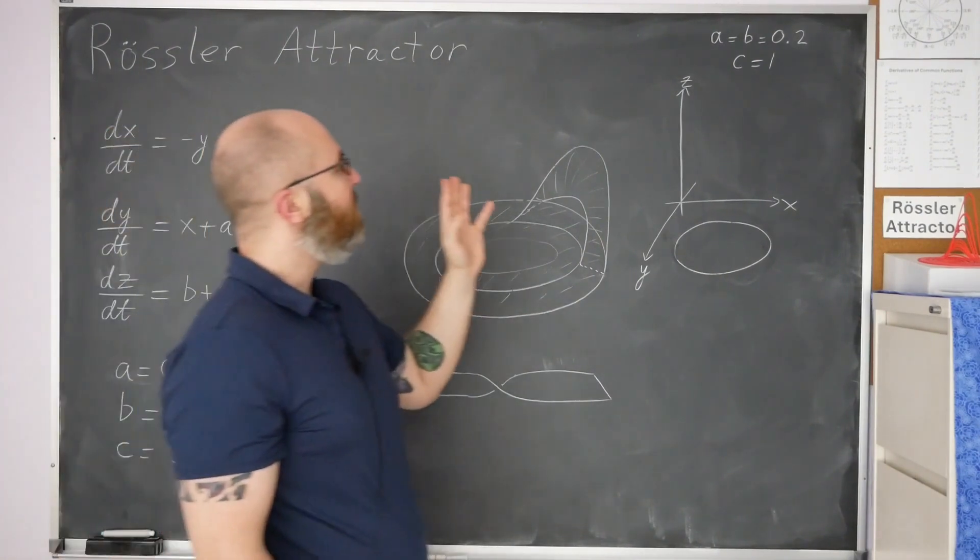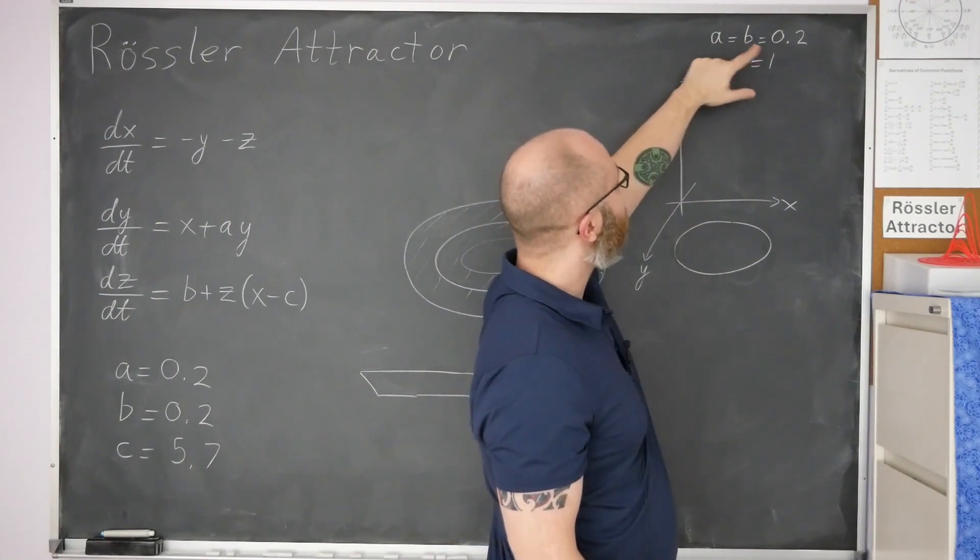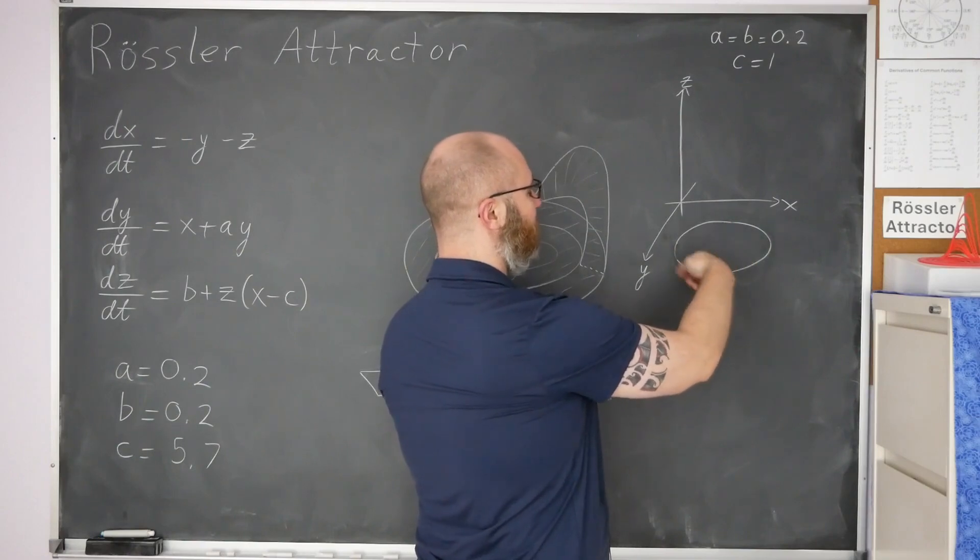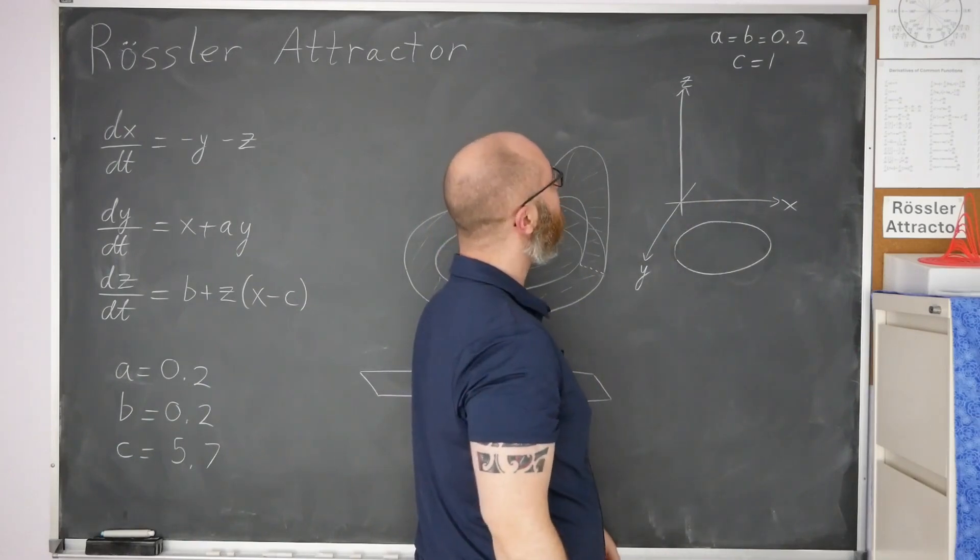And another one, so if you just look at a equals b equals 0.2 and c equals 1, you just get a limit cycle, so attracting, approximately in the x, y plane when you start.